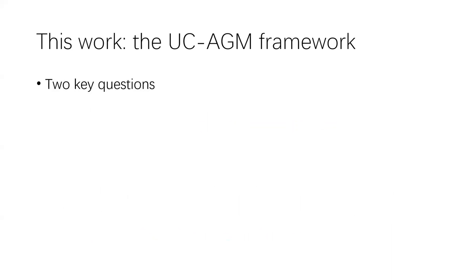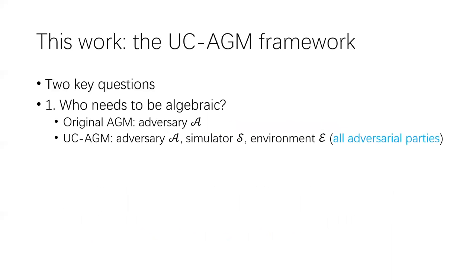Our work combines UC and AGM, and we propose the UC-AGM framework. Here we have two key issues to tackle. The first one is, which parties need to be algebraic? In the original AGM, there's only a single adversary, and we require that this adversary is algebraic. But in UC, there are actually three adversarial parties in a security definition: the adversary A in the real world, a simulator S in the ideal world, and an environment E which tries to distinguish between the real world and the ideal world. So we require all these three parties to be algebraic in UC-AGM.